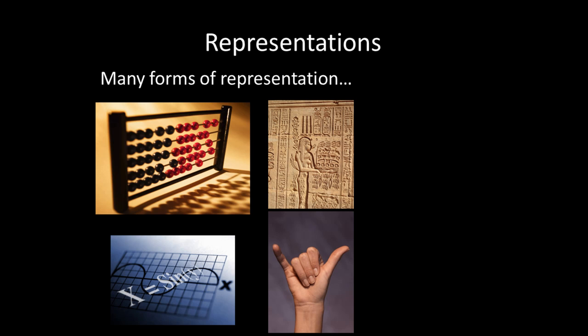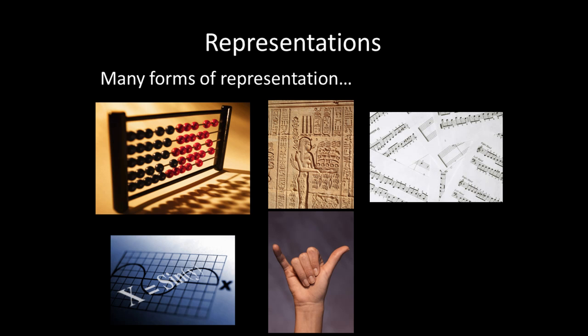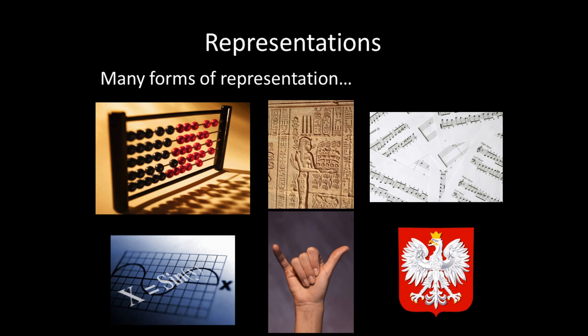For example, the middle top image shows Egyptian hieroglyphics, which use pictographic methods for displaying language. Below is a picture of sign language, which is a form of language representation designed for deaf and hard of hearing people. The image on the top right shows musical notation designed to represent sound. Finally, the image on the bottom right might be considered a form of the representation of ideas. In this example, the eagle of Poland is shown as a representation of national identity that can be used to create a common bond for people from a given place.